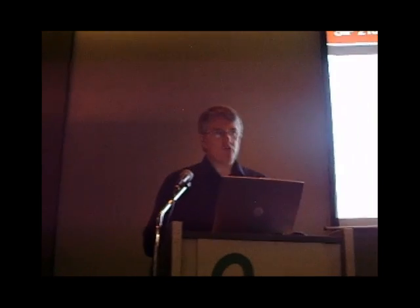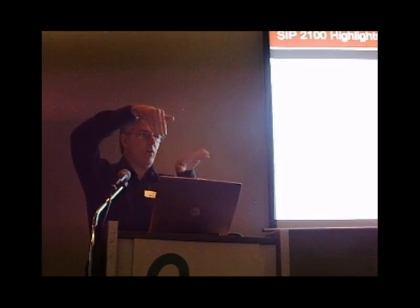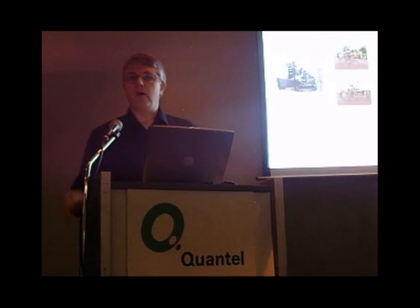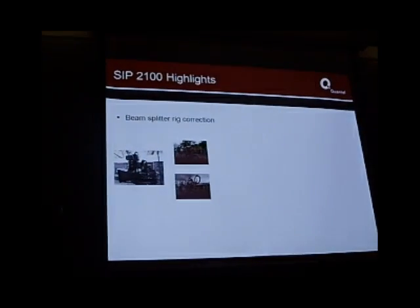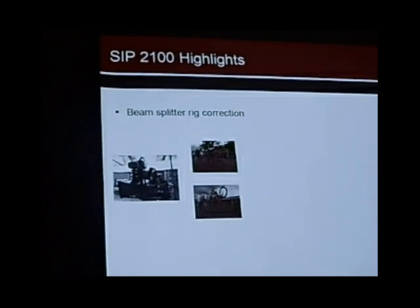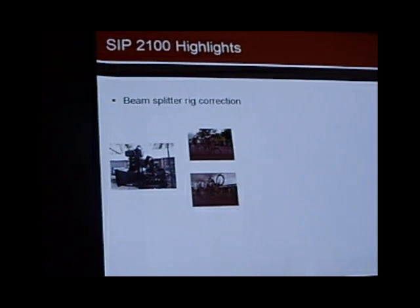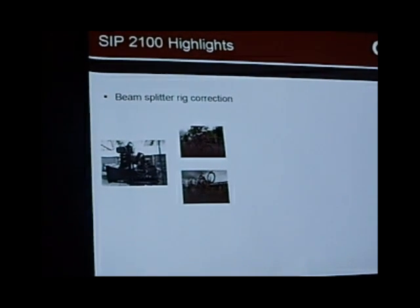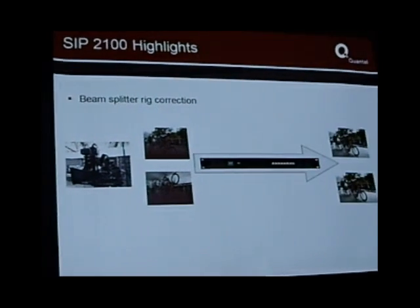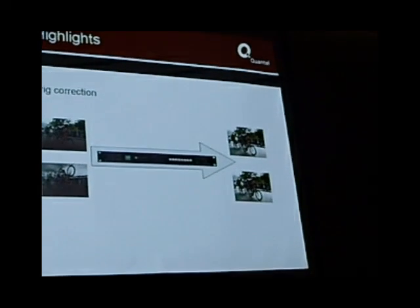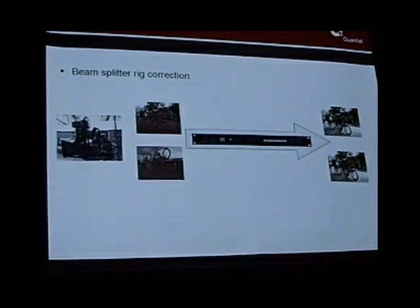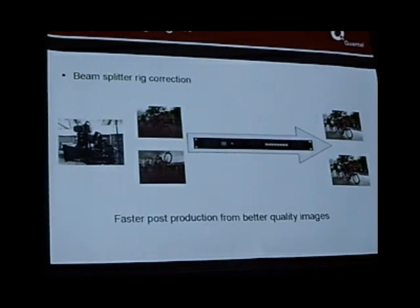Beam splitter rig correction — straight down into the detail. If you're going to shoot stereo using a beam splitter rig, you've got the left eye and right eye going up by a silver mirror off to two different cameras. The pictures that come out of a beam splitter rig on left and right eye — one of them is upside down. There's also a slight chroma difference because of the different light path through the beam splitter. You can fix both in post, but it's difficult, hard work, and just extra work you don't need. Stick the SIP 2100 in there and you get perfect images straight away — ready to record and take into post. It's about making things much more efficient, streamlined, and predictable, with faster post-production from better quality images.